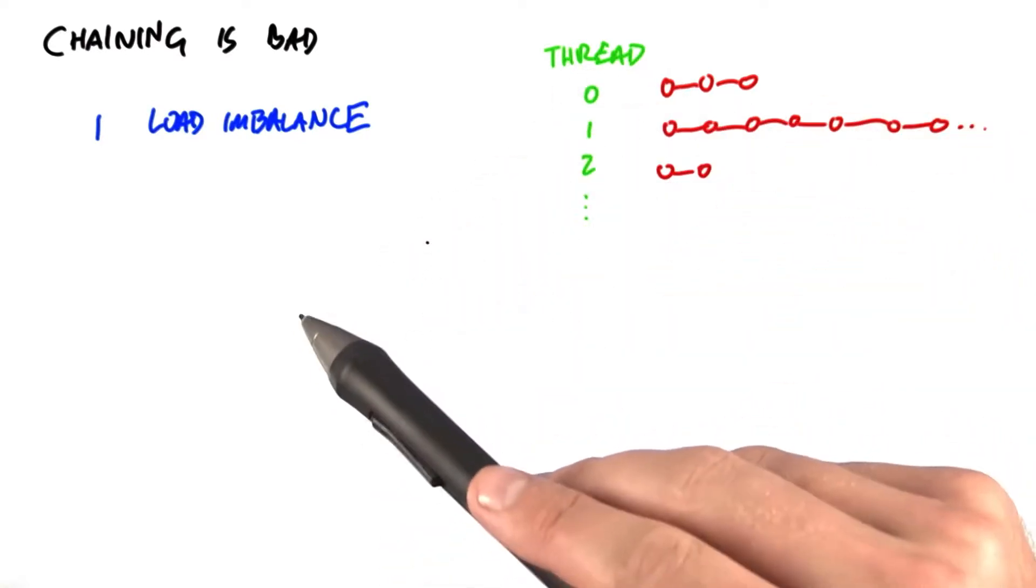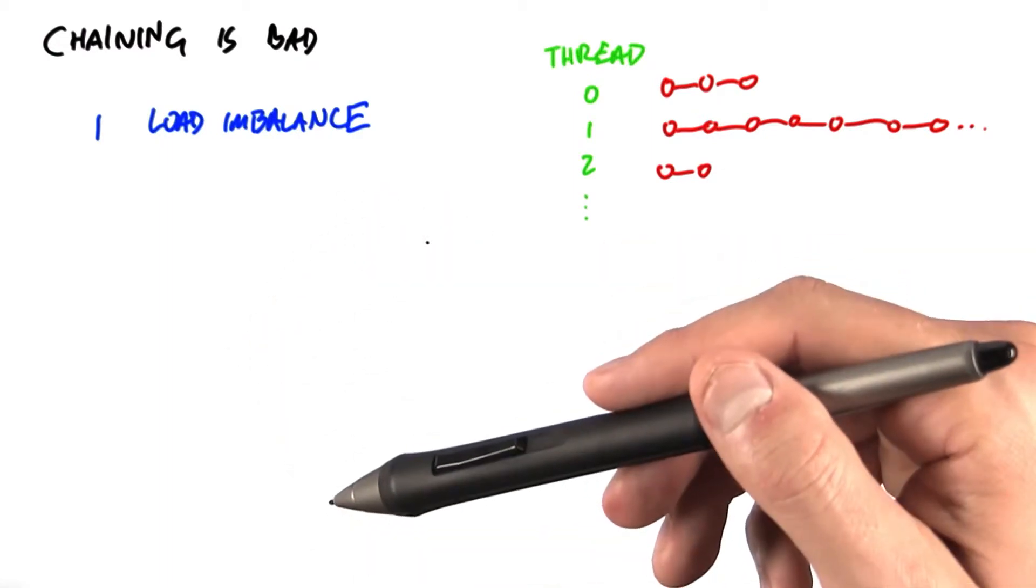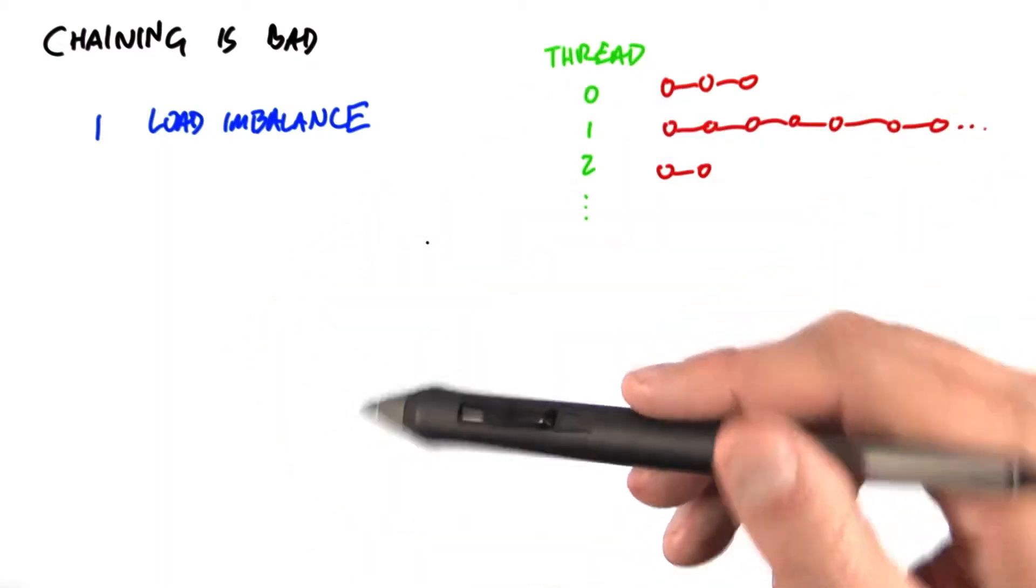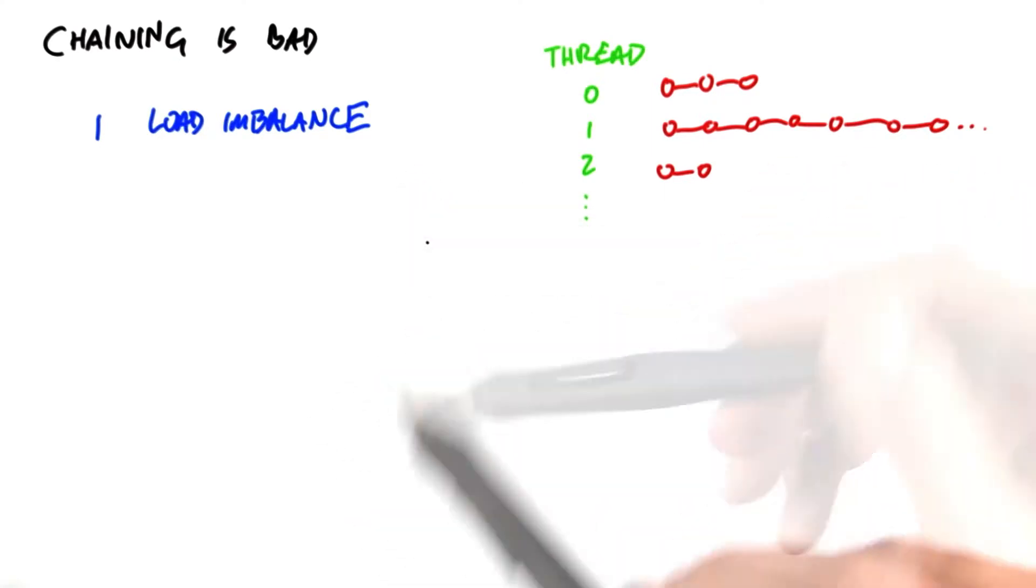And chaining has two main disadvantages. Number one, let's say we're looking up many items, one per thread. And we know to look up one item, we calculate the hash function for that item. That parallelizes nicely. It's just a map operation.